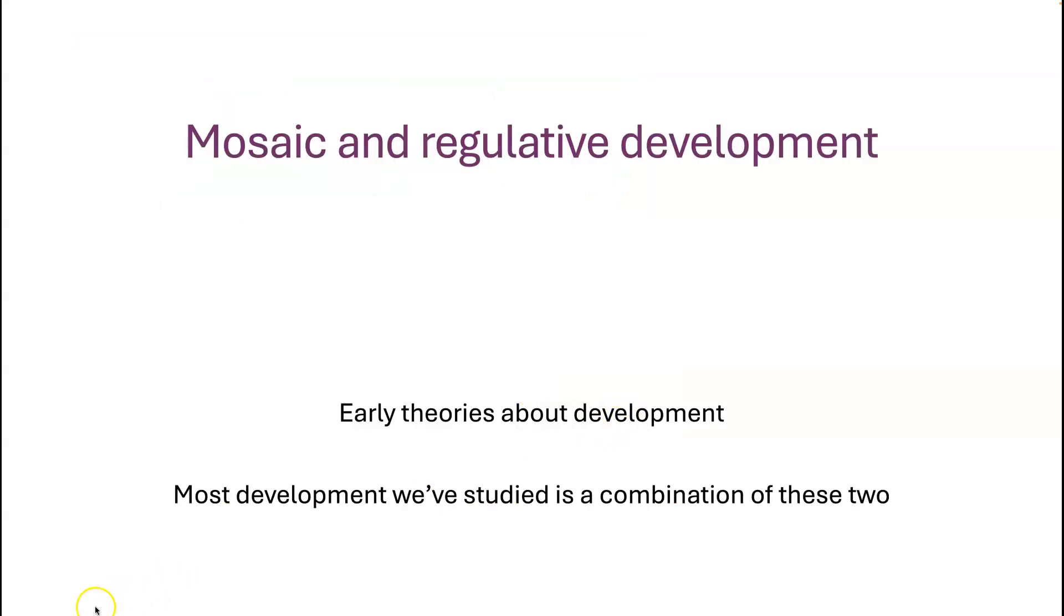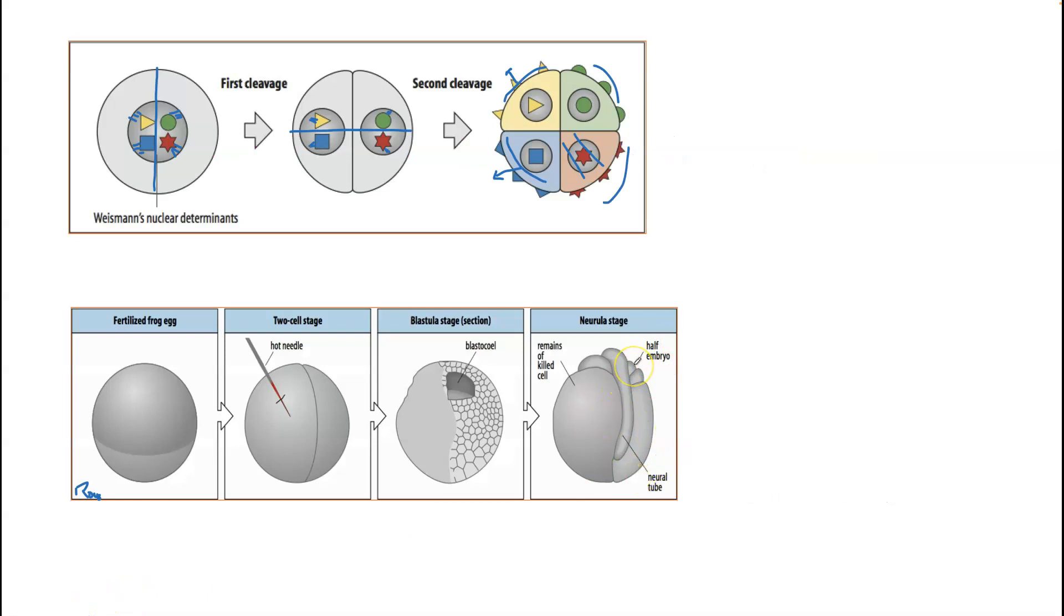When that happened, he saw the development of the remaining cell up to the neurulation stage, so the neural tube started to develop. It didn't pass beyond that. We now know that even though this tissue has been killed and it's not dividing, there were still proteins, RNAs, and so on that provided some information to the living tissue attached to it, so that it had some sense—it had some sort of information provided about what it was supposed to do on its side.